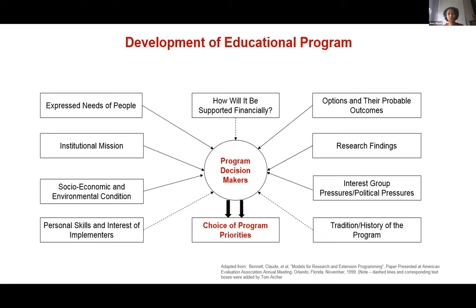When developing an education program, you need to consider more than just community needs and assets. Consider institutional mission — does the problem fit within the mission of extension? Is it beyond extension's reach in terms of mission or resources? You may face pressure from funders such as counties. Consider the tradition and history of a program. There are many factors beyond needs and assets to look at as you develop your education program.